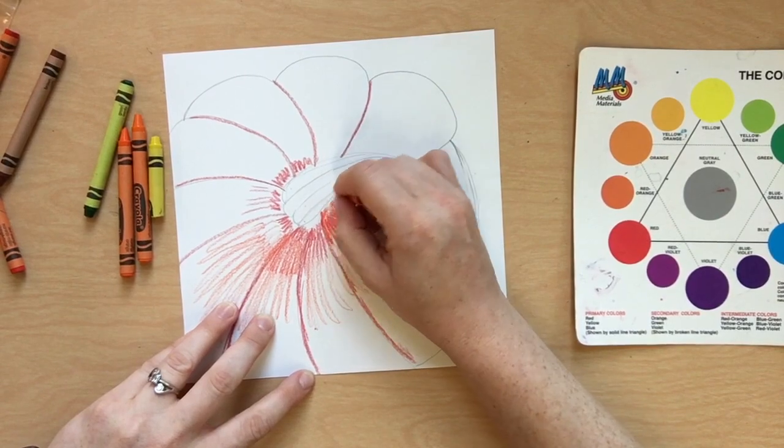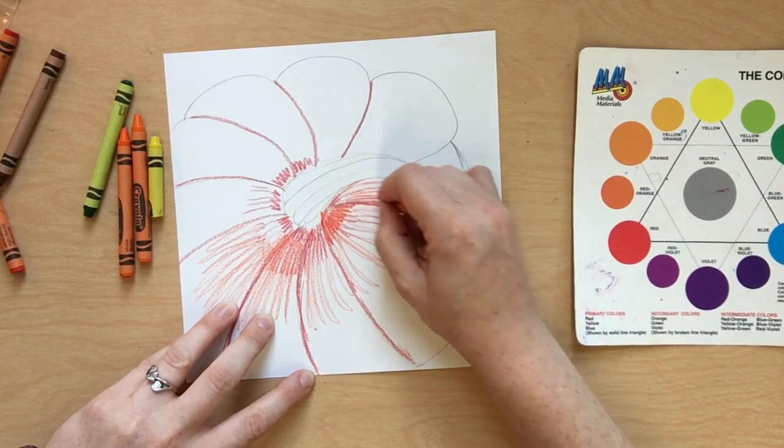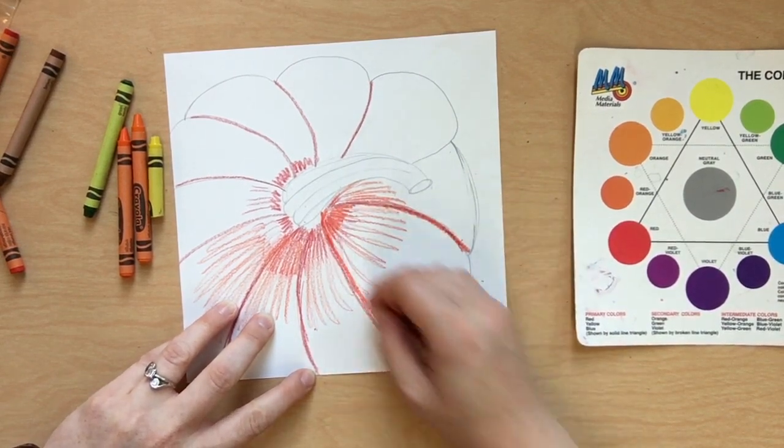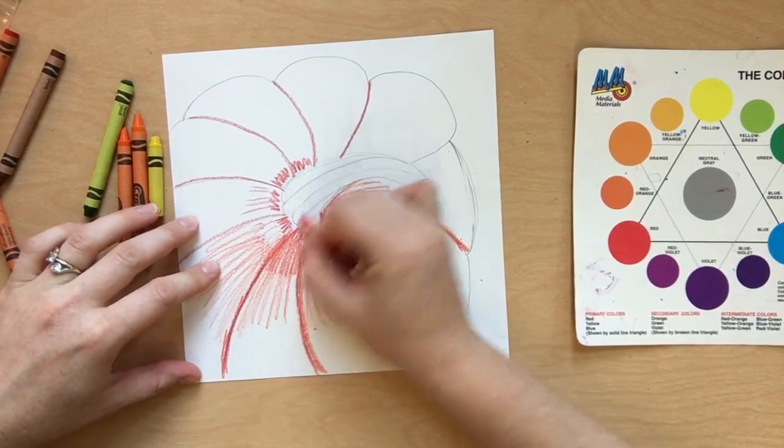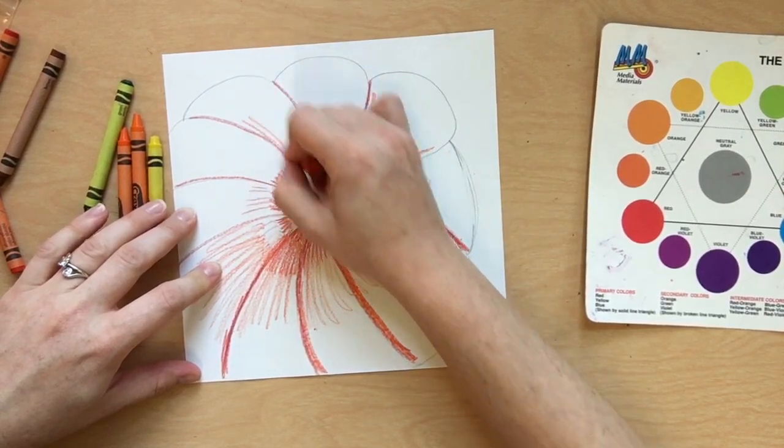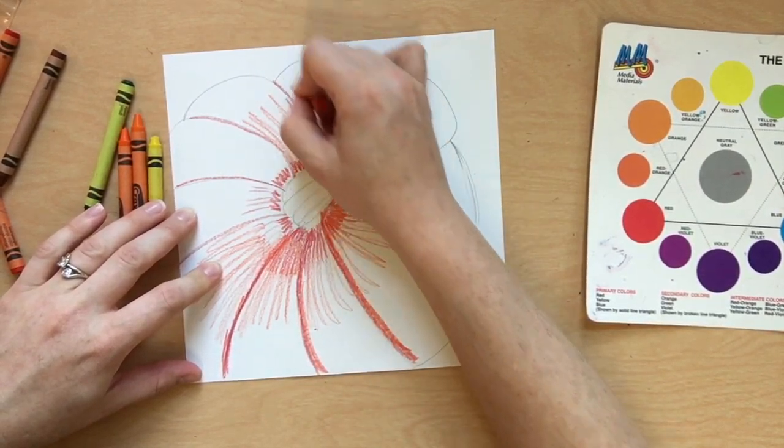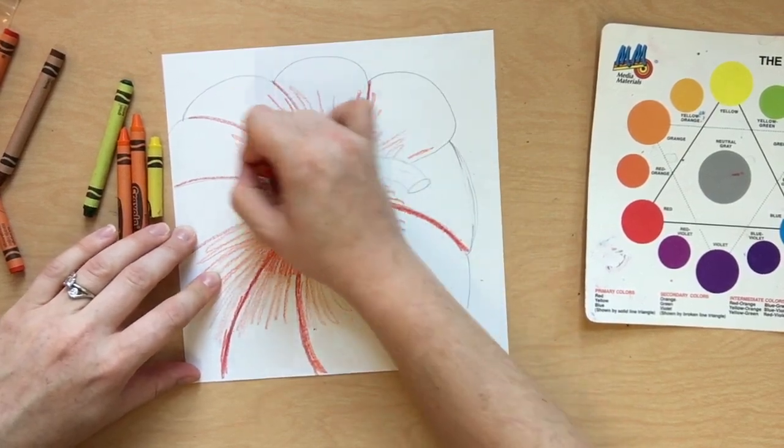Going down, out, away from the pumpkin stem. Kind of radiating like a firework would, starting in the center and moving down. Darken those creases. It's a little bit of a shadow there. And just keep adding that red-orange. Feel free to pause the video whenever you need to, because this is way sped up.